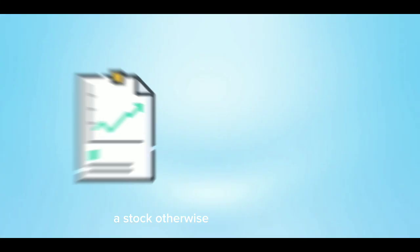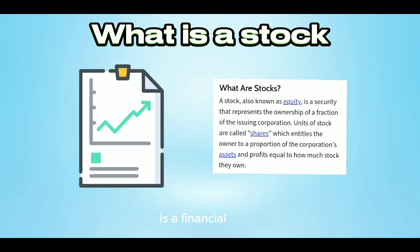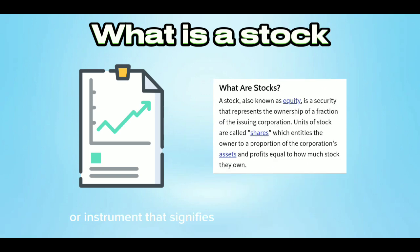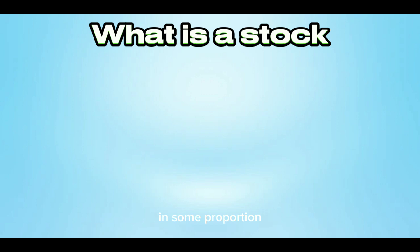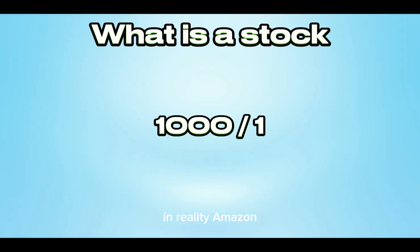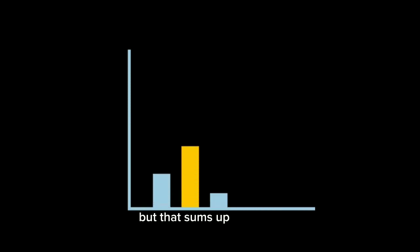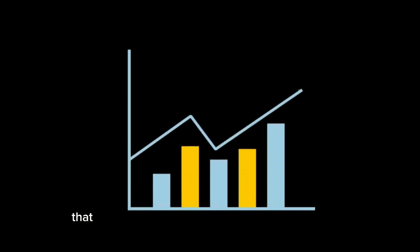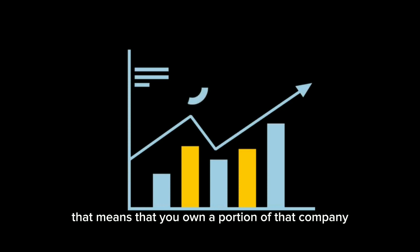A stock, otherwise known as a share, is a financial token or instrument that signifies ownership of a company in some proportion. Basically, if Amazon had 1,000 shares and you bought one share, you would own one one-thousandth of Amazon. In reality, Amazon and companies alike have millions of shares, but that sums up the point. When you own a stock, you own a portion of that company, and as the value of that company increases, so does your stock price.